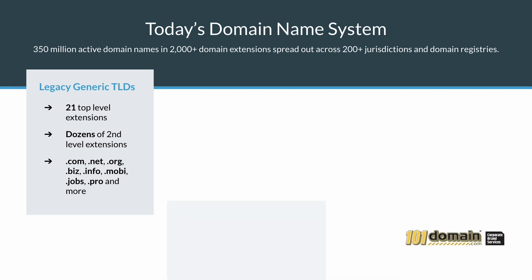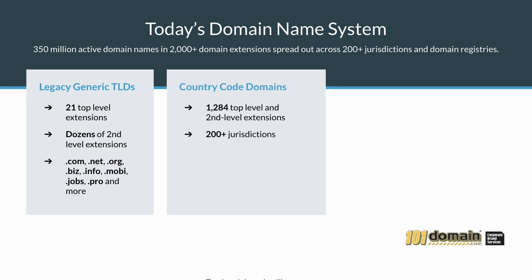Country code domains, also referred to as CCTLDs, consist of the 200 or so country code domain extensions which follow the ISO 3166 country code standard, as well as their respective sub-extensions. For example, there is .uk, .co.uk, .org.uk, .ltd.uk, and so on. Some countries like China have dozens of sub-extensions beyond just .cn.